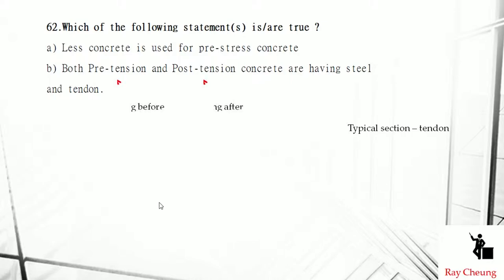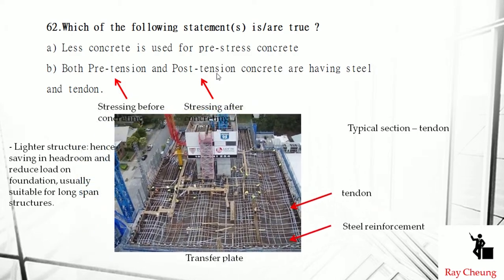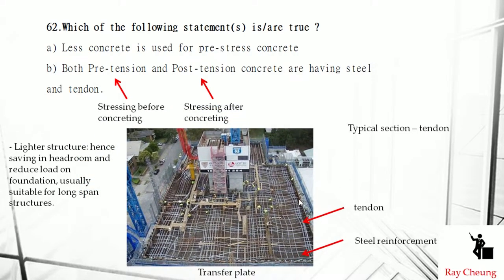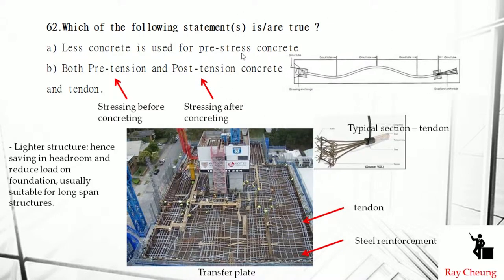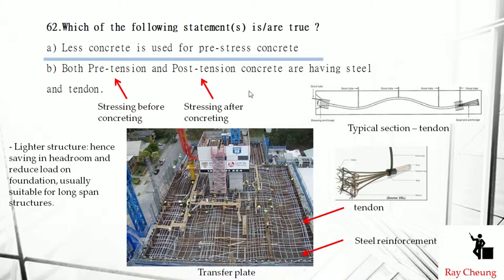This one is talking about pre-tension and post-tension. You need to remember: pre-tension is the stressing done before concreting; post-tension is stressing done after concreting. For example, for a transfer plate that is 3 meters deep, they will use a tendon to reduce concrete depth while still having reinforcement and tendons. If you remember this picture, you will easily answer the question.